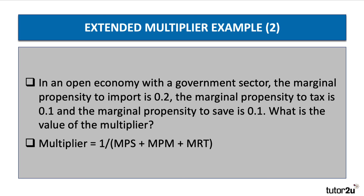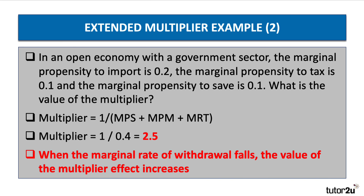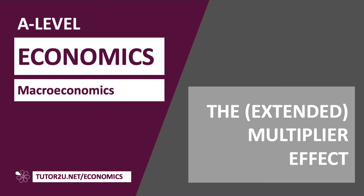Same formula. By the way, in the exam always write down the formula — you get credit for doing that. Even if you make a numerical error, if you put the right formula down you will get credited. This time our leakage is only 0.4: 0.2 plus 0.1 plus 0.1 is 0.4. So the multiplier here is 1 divided by 0.4, which is 2.5 — a higher figure. When the marginal rate of withdrawal goes down, the value of the multiplier goes up. That was the extended multiplier effect using the extended formula.